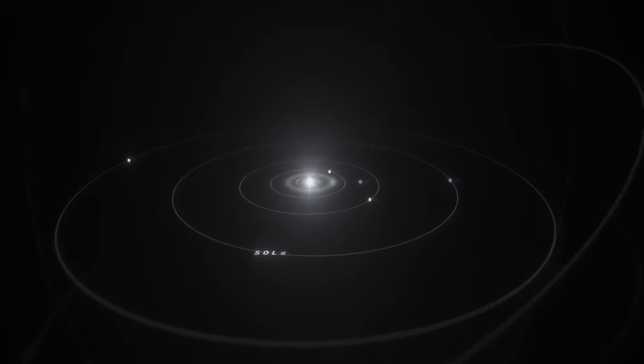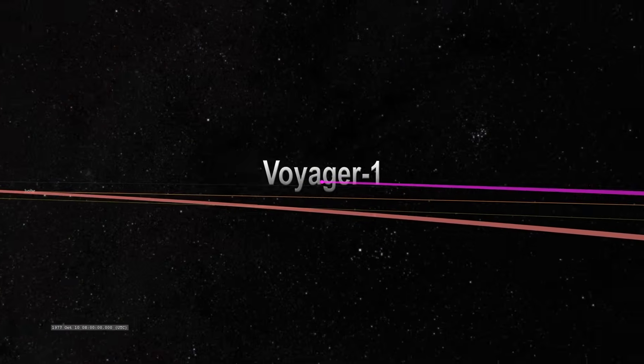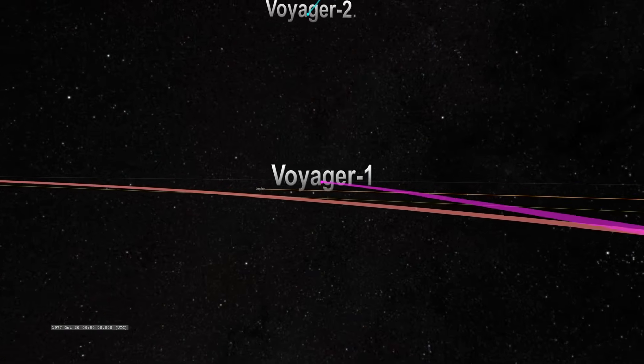In 1977, NASA launched a historic mission to explore the outer planets of the solar system, Voyager 1 and Voyager 2.